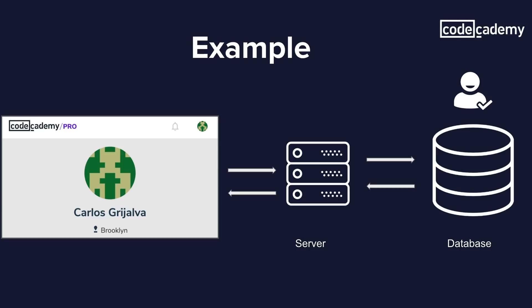Using the restaurant analogy again, you can think of the server as a waiter in charge of sending information back and forth, and the database as the kitchen or chef that makes the orders correctly and sends them back to the server to be delivered to the client. So now we have a better understanding of how backend works and what it involves. Let's look at examples of what a backend developer will do on a day-to-day basis.